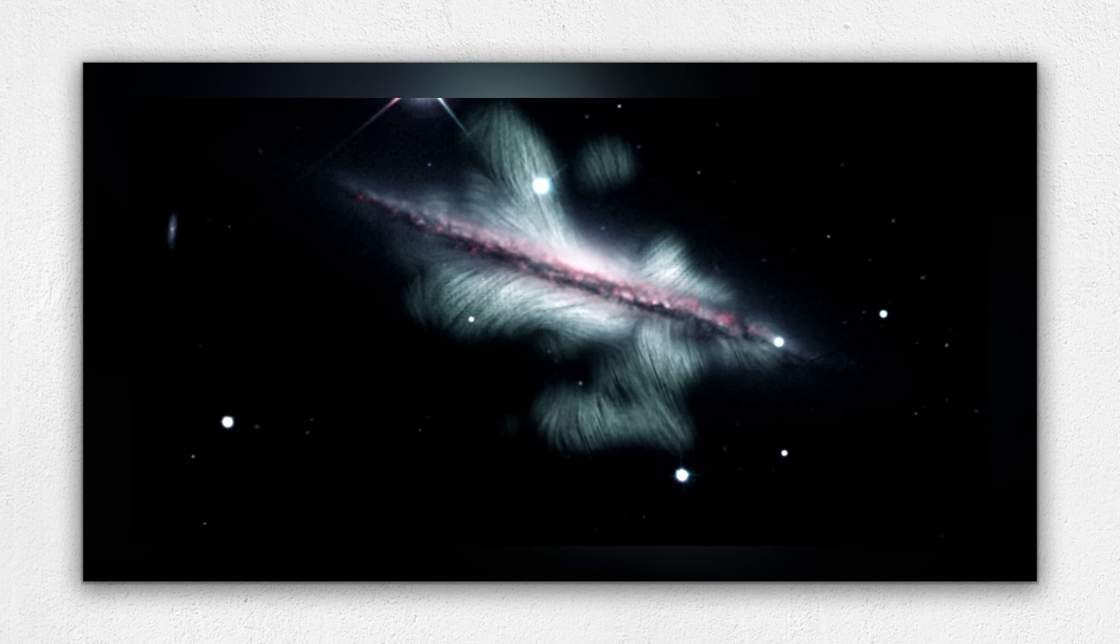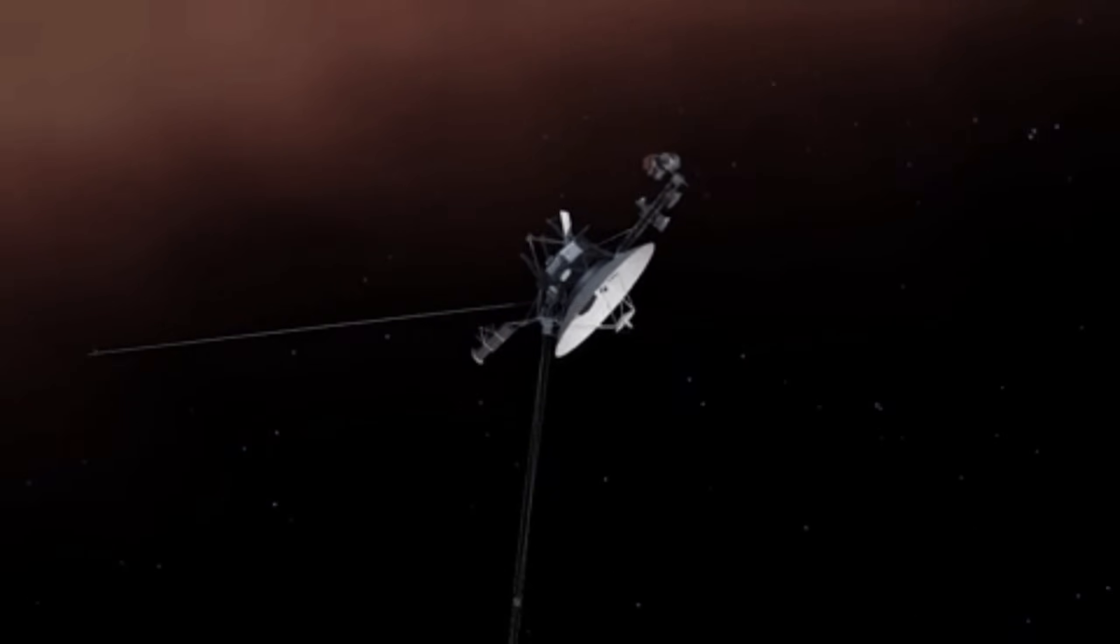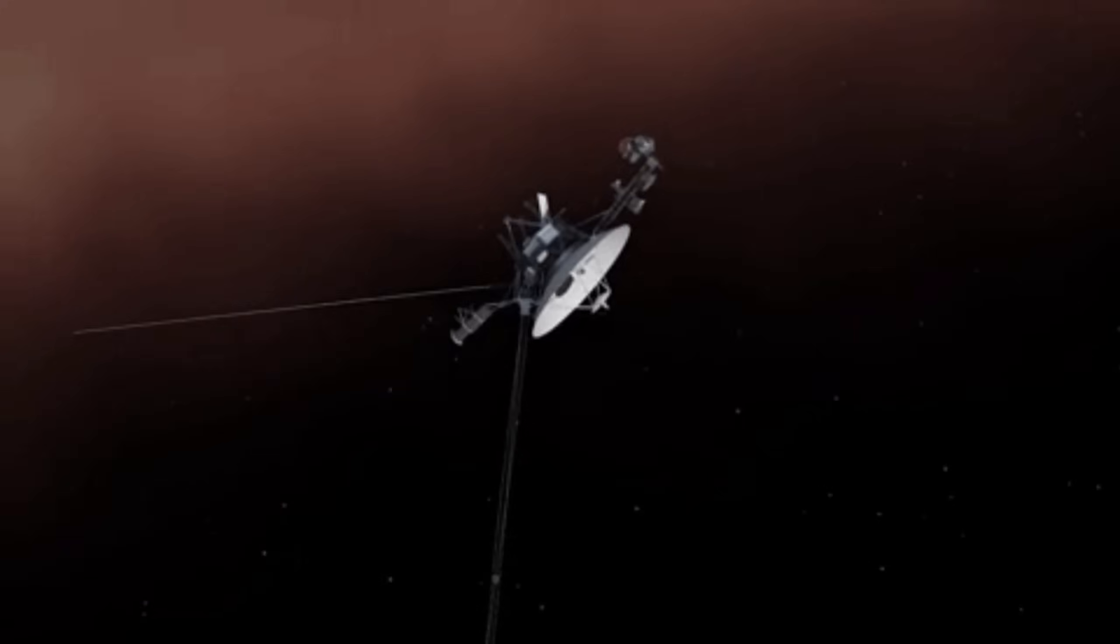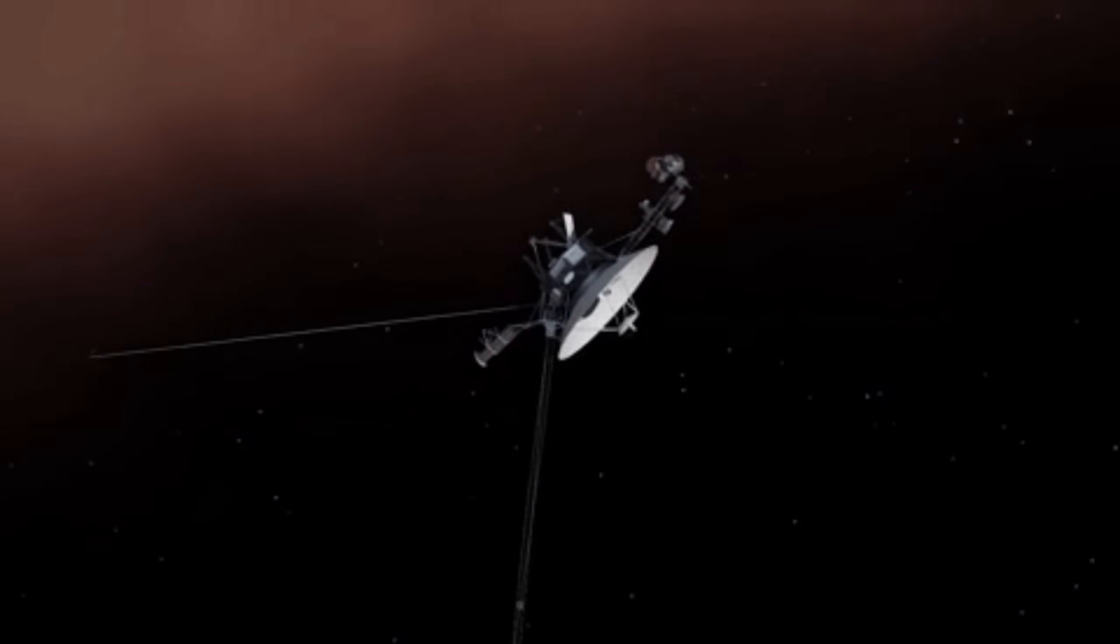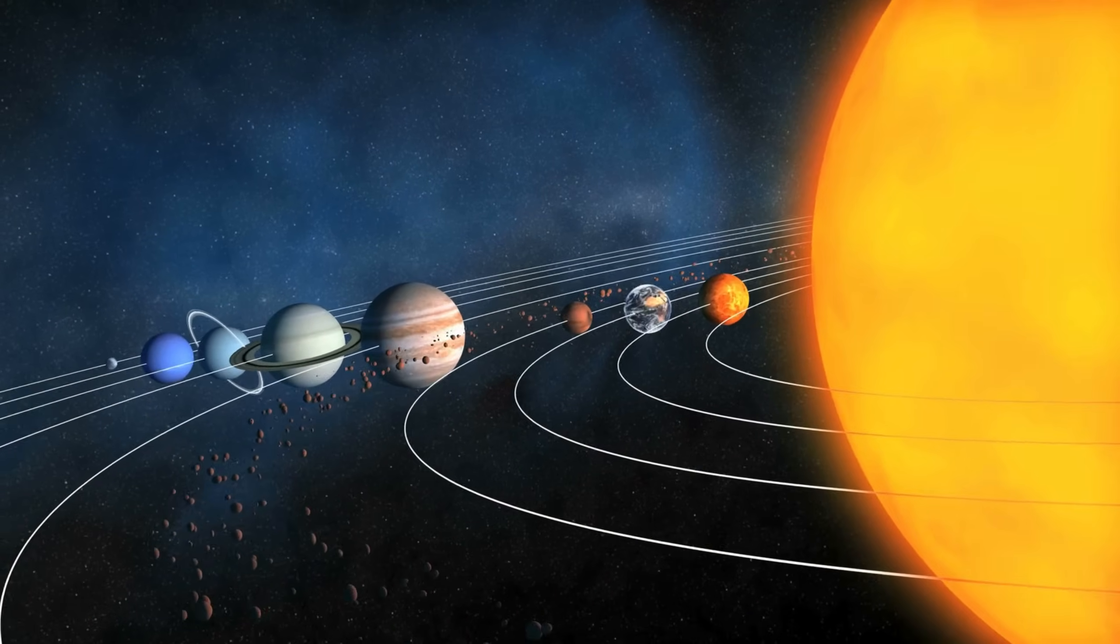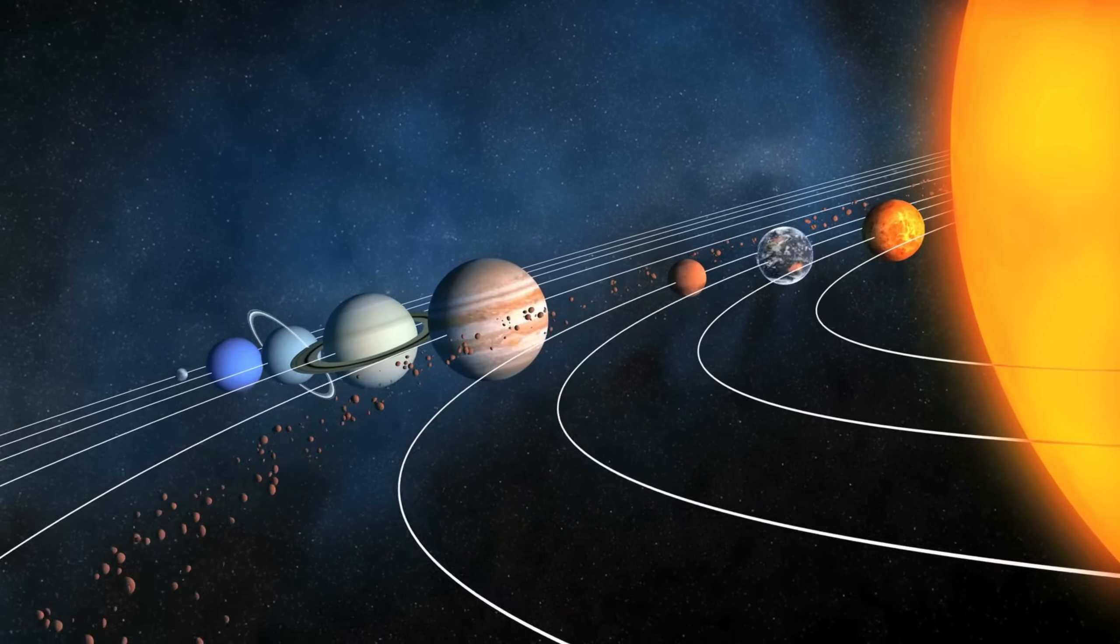Scientists expected Voyager to detect a magnetic field in interstellar space aligned with the galaxy's magnetic field. Instead, Voyager 1 discovered that the magnetic field in the interstellar medium was slightly tilted and still influenced by the Sun's magnetic field. This unexpected tilt suggests a complex interaction between the heliosphere and the interstellar environment, hinting that our solar system might be squashed rather than a perfectly spherical bubble.